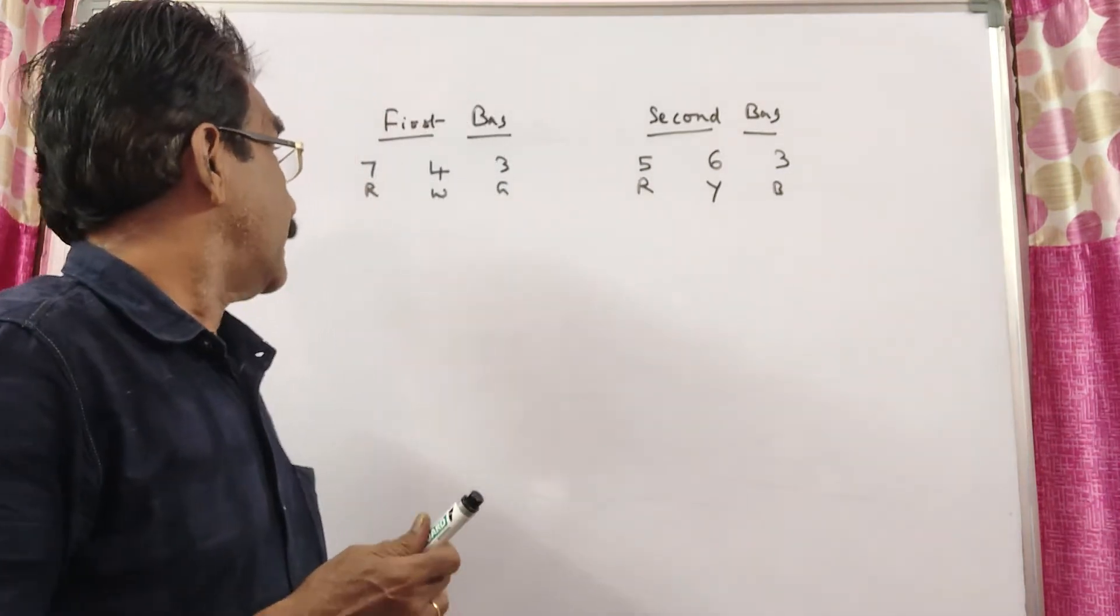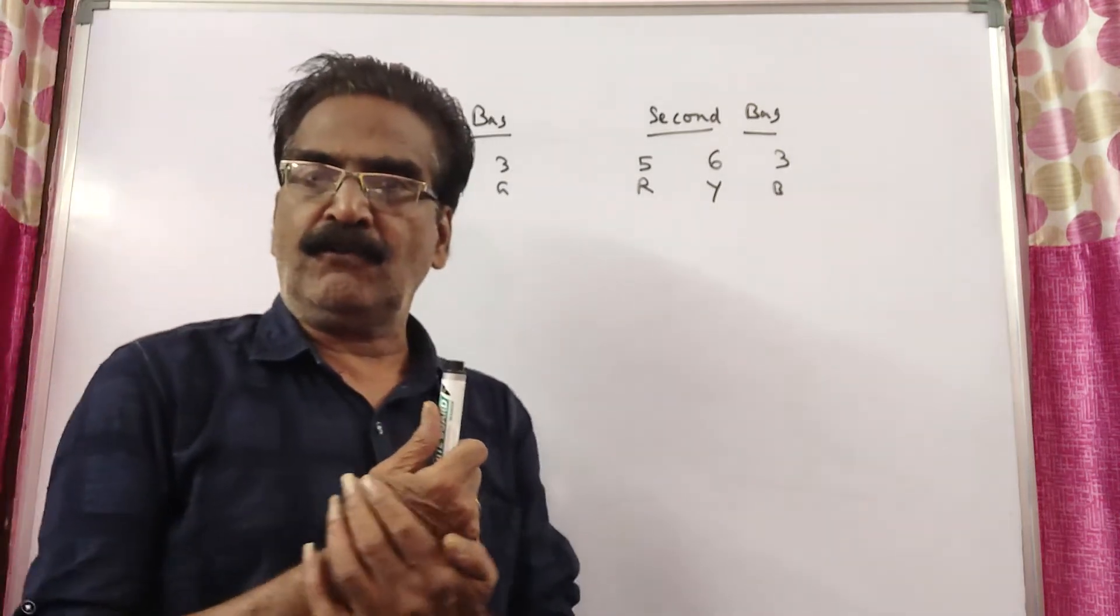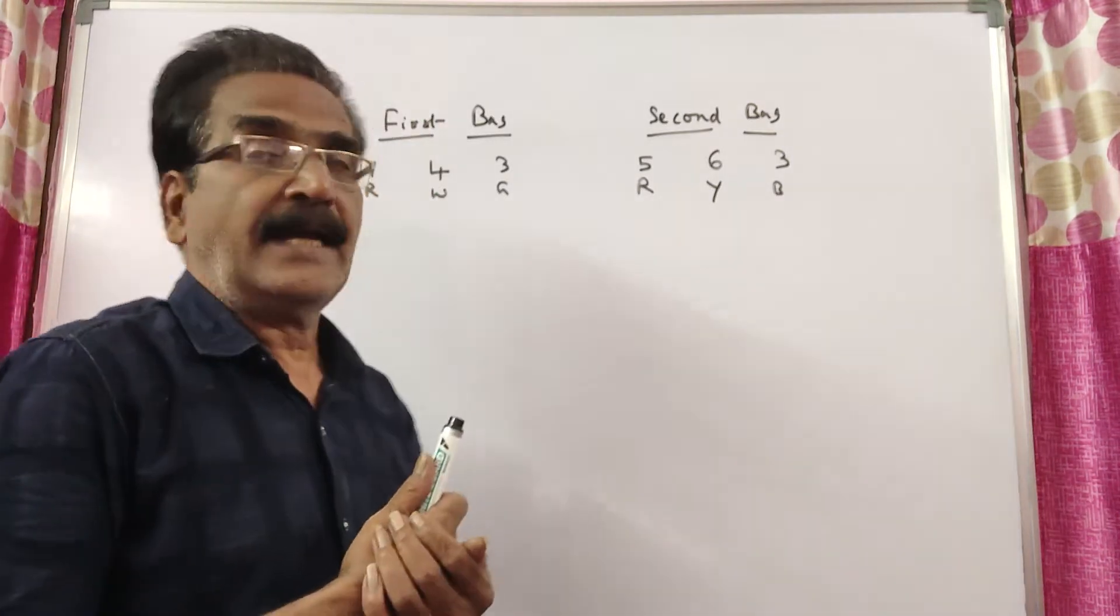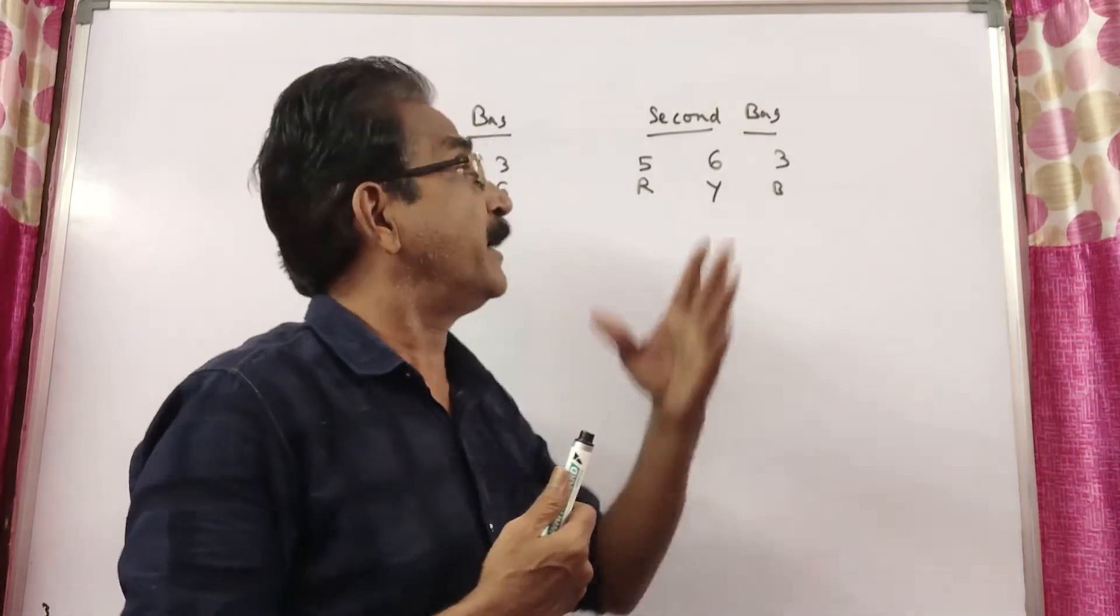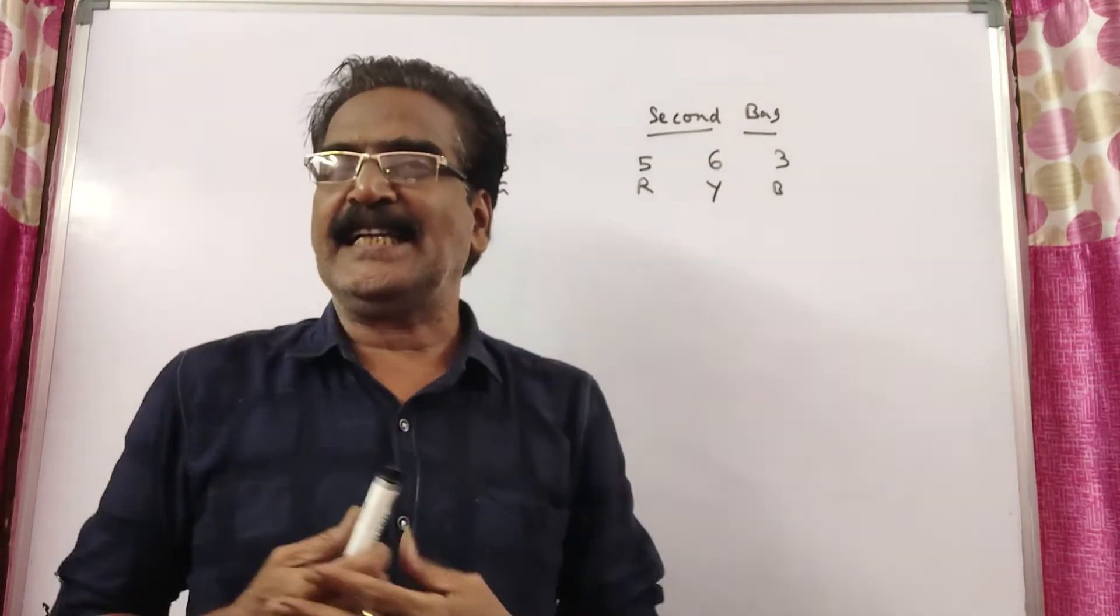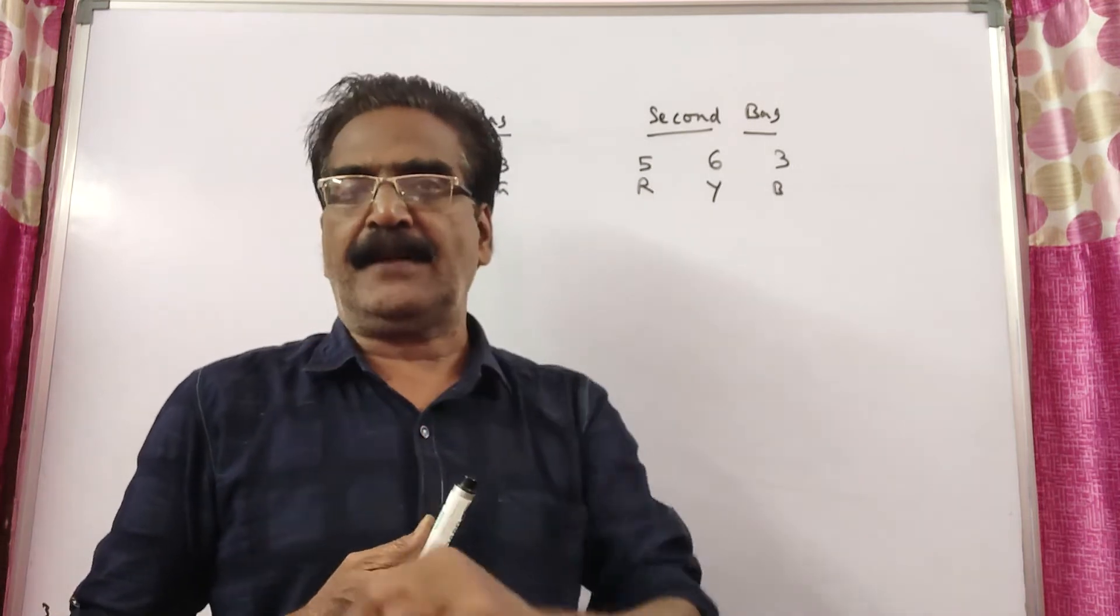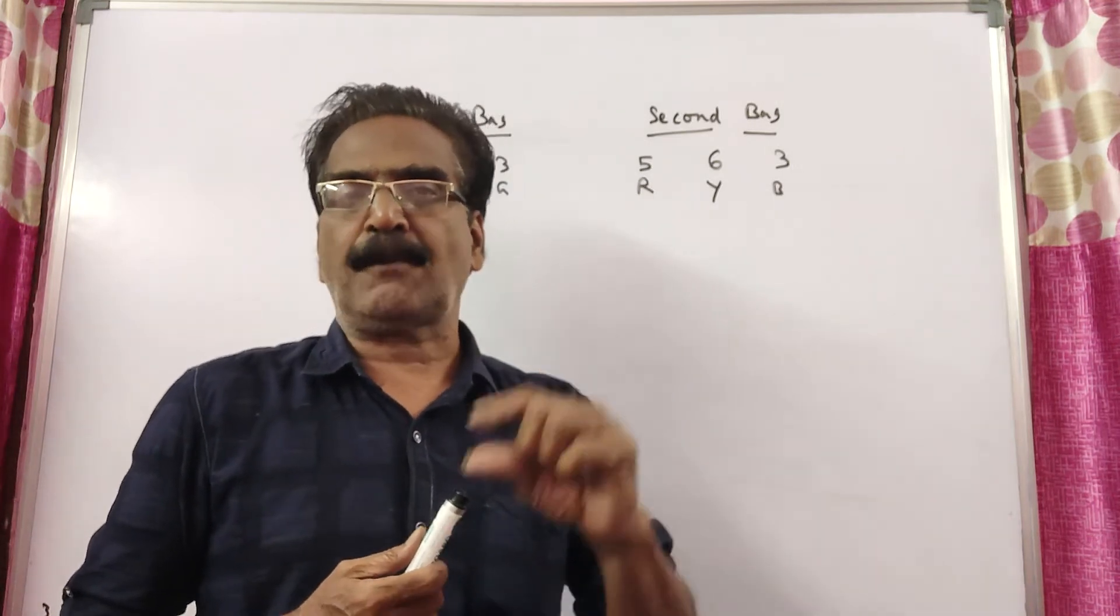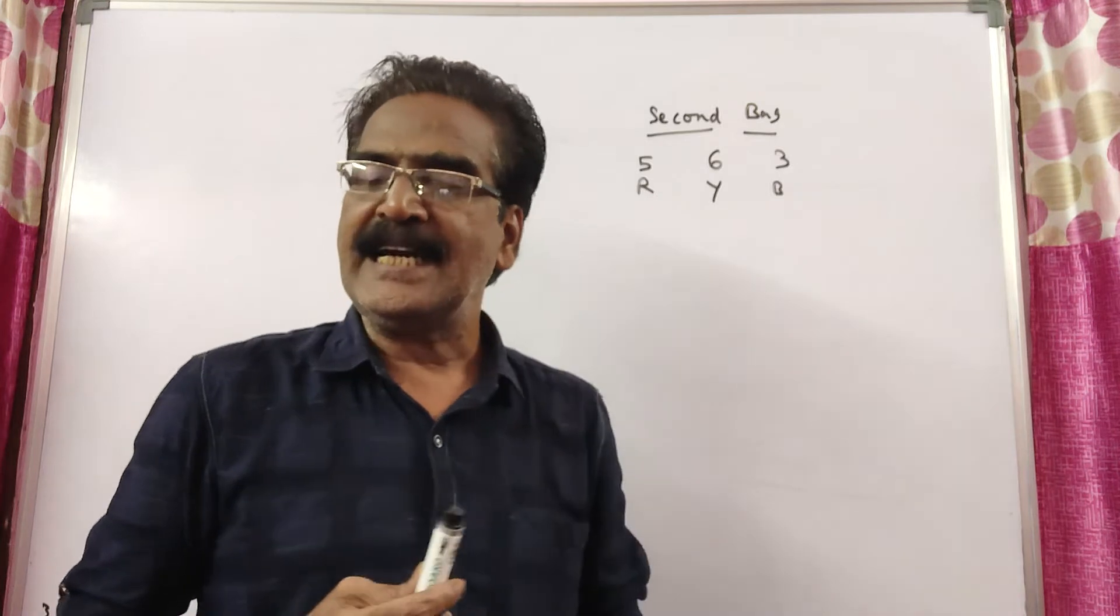See friends, a bag contains 7 red, 4 white, and 3 green balls, and another bag contains 5 red, 6 yellow, and 3 blue balls. A bag is selected at random and a ball is drawn from it. What is the probability that the ball is red?